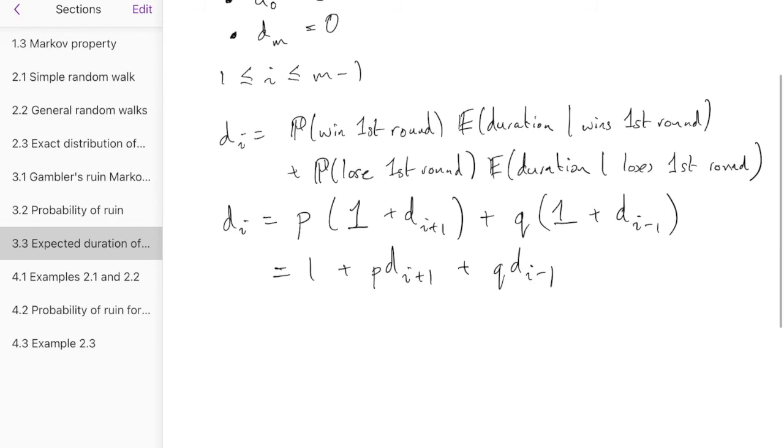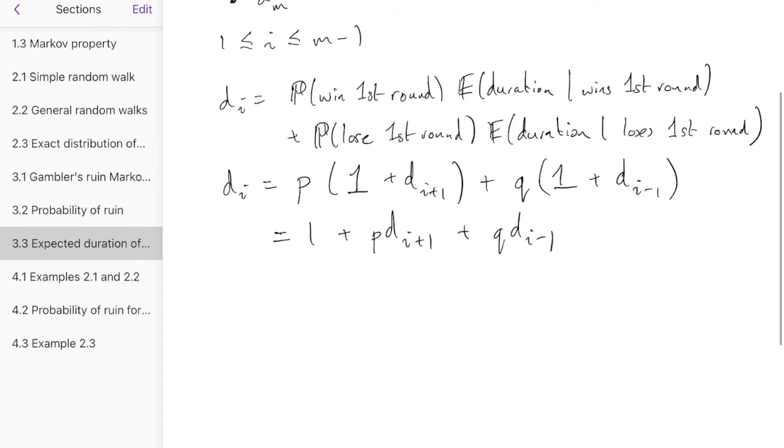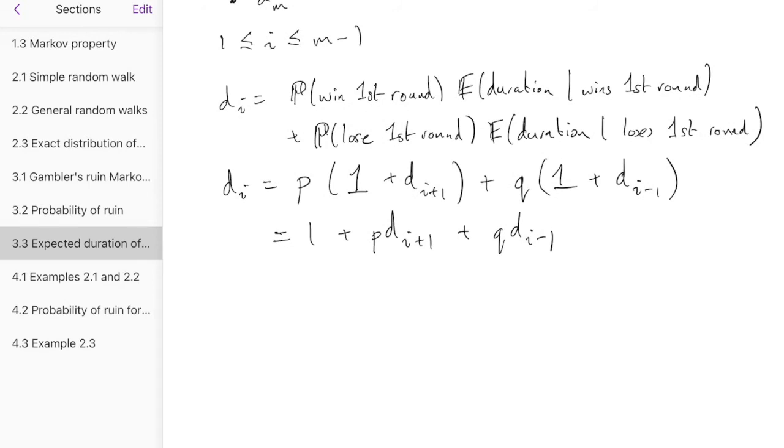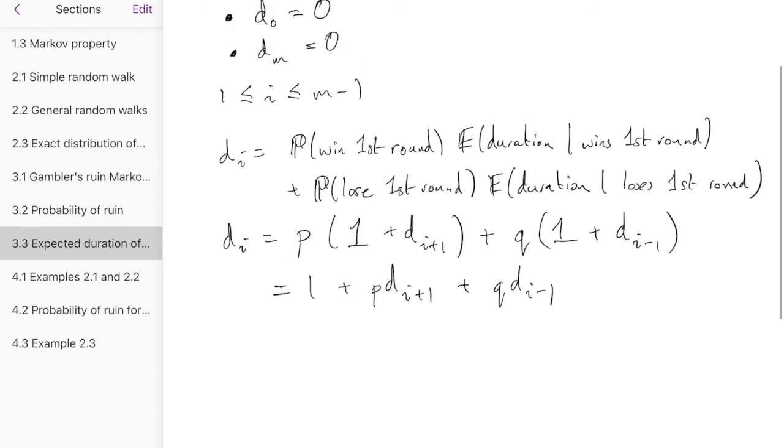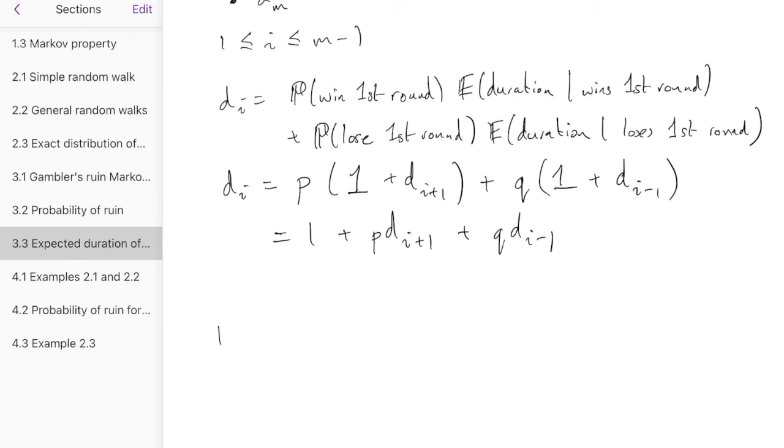And so again, we can write everything we've got here, putting all the d's on the left-hand side and putting our conditions together to have pdi plus 1 minus di plus qdi minus 1 equals minus 1, once we've taken everything over to that side. And we also have d0 equals 0 and dm equals 0.